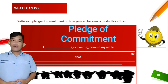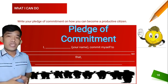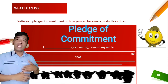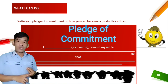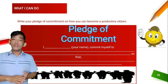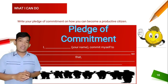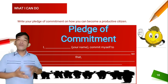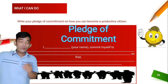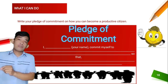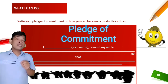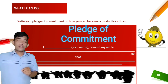We are now on the last part of our activity — congratulations for still watching our video! This time, we are going to have your pledge of commitment under What I Can Do. Knowing the functions and importance of education, write your commitment or pledge on how you will become a productive citizen. In your module, you have the pledge of commitment template: write your name, then 'I commit myself,' then write your commitment — what you are going to commit to in order to be a productive citizen of this country. Then state your reason why you are going to make that commitment.